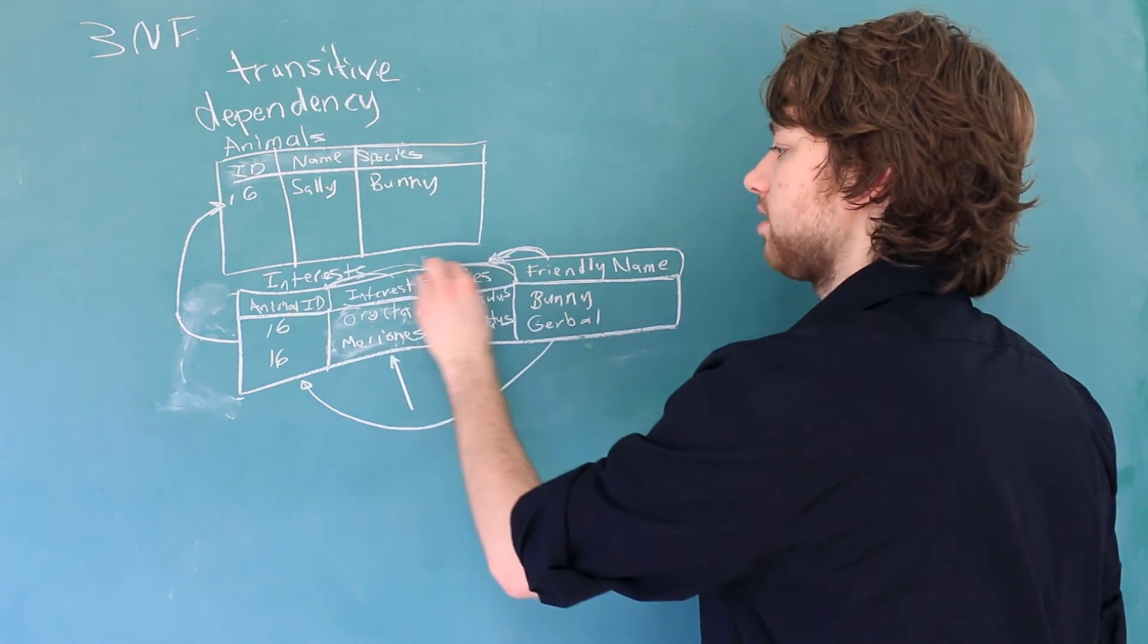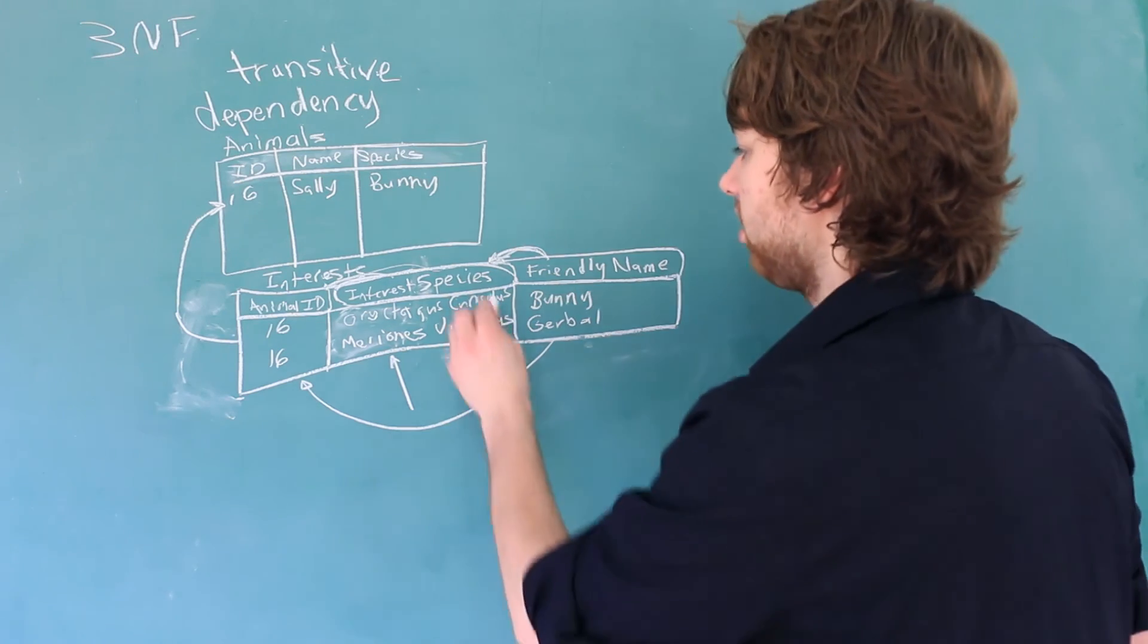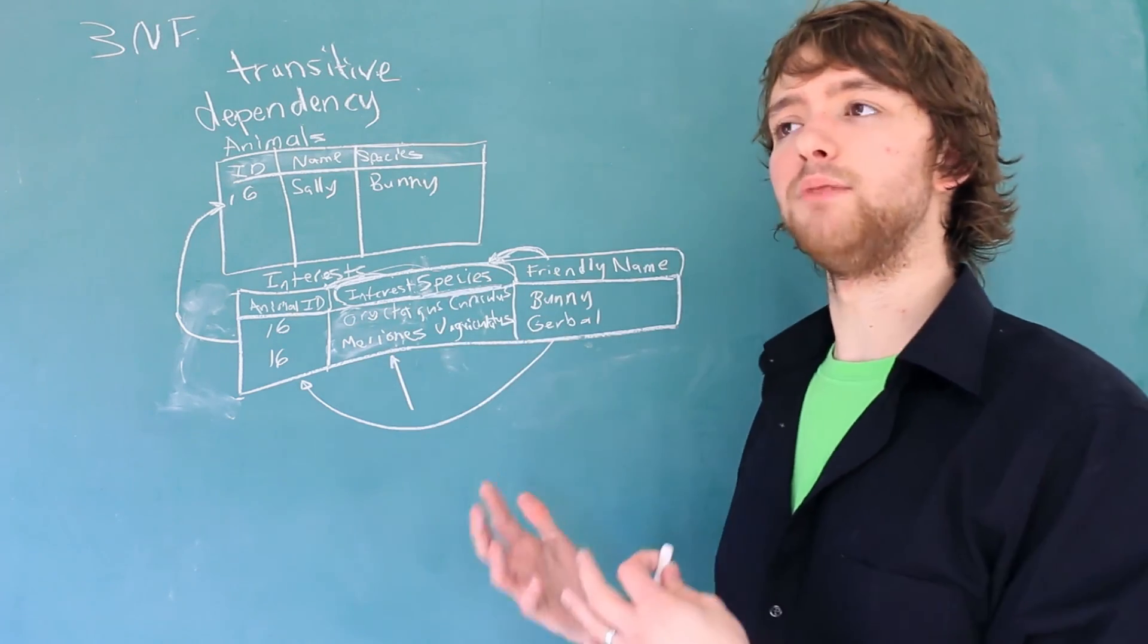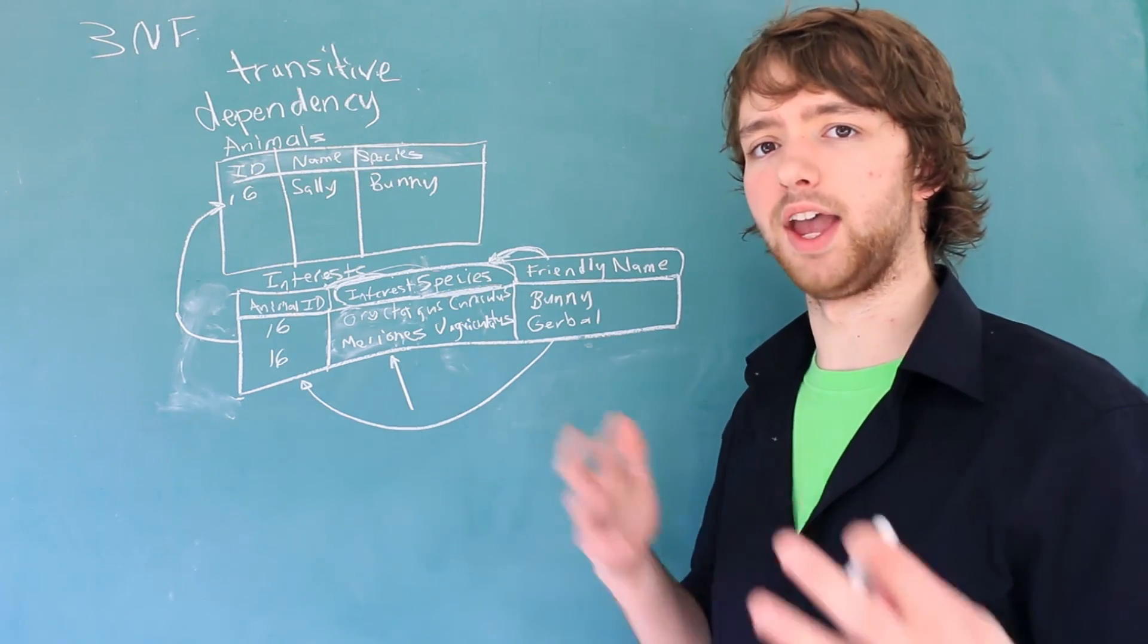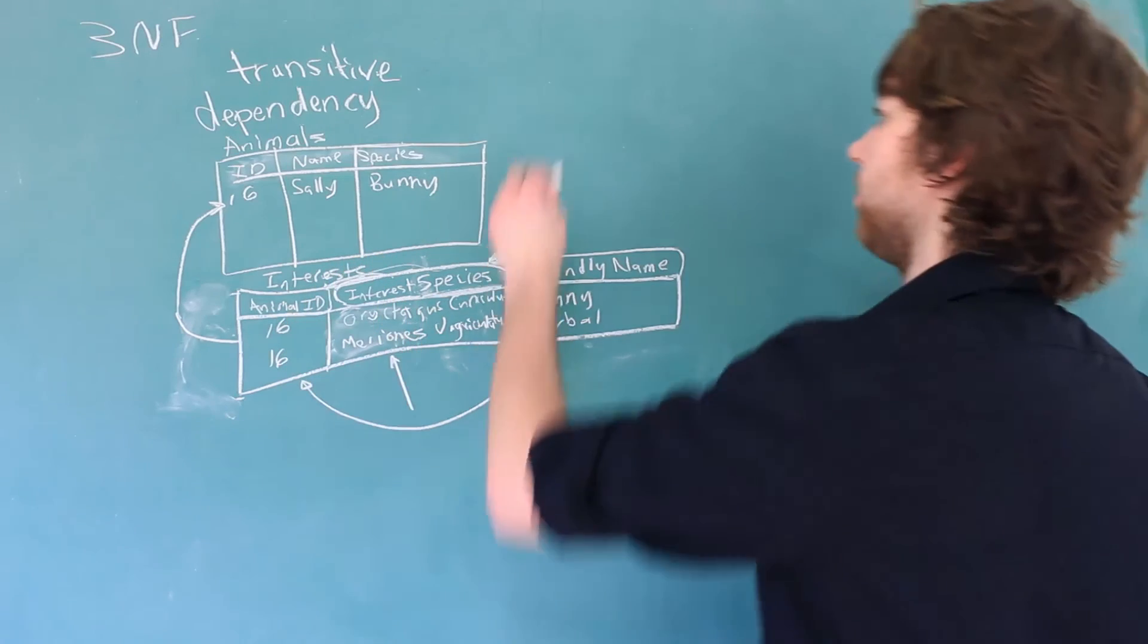What you need to do is take the column that this column depends on, in this case interest species, and break that off into its own table. And specifically, we could just take the species because that would be more useful. Because why limit the table to species that animals are interested in when we could just make a table for species?